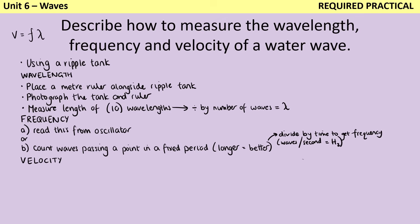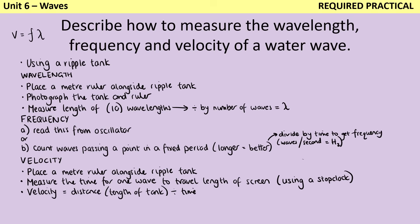Finally, to work out velocity, if we weren't going to work it out from the other two values that we've got, we would again place a meter ruler alongside the ripple tank, and then measure the time for one wave to travel the length of the screen using a stop clock. And then we could work out that the velocity or the wave speed is distance, which is the length of the tank divided by time.